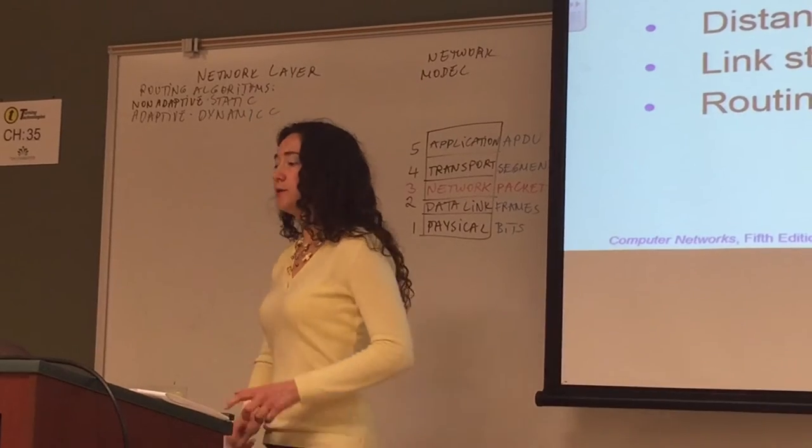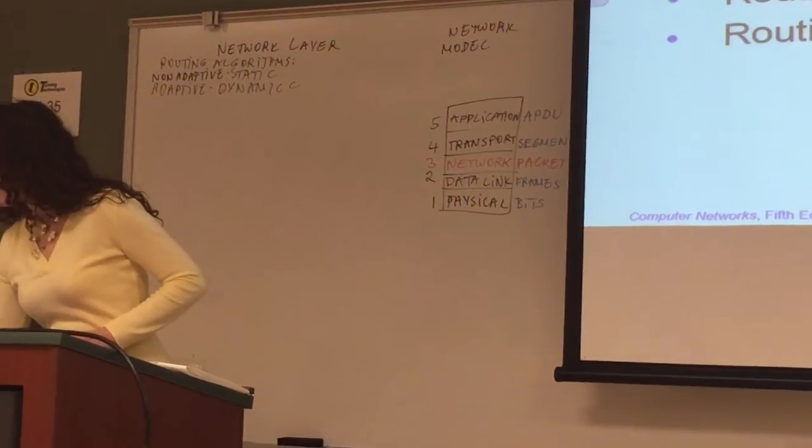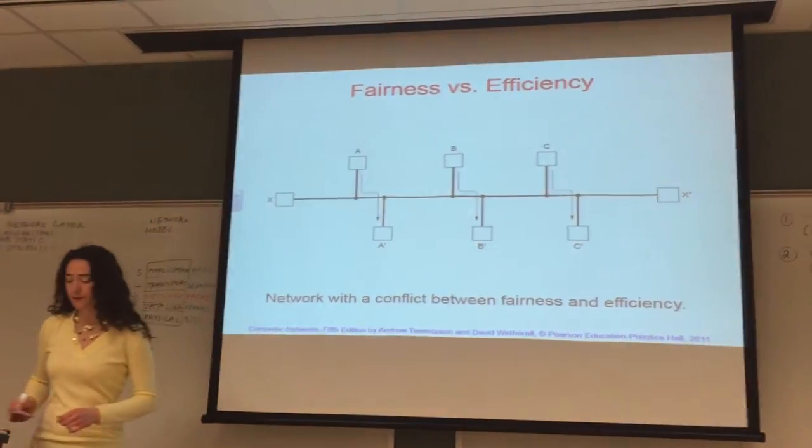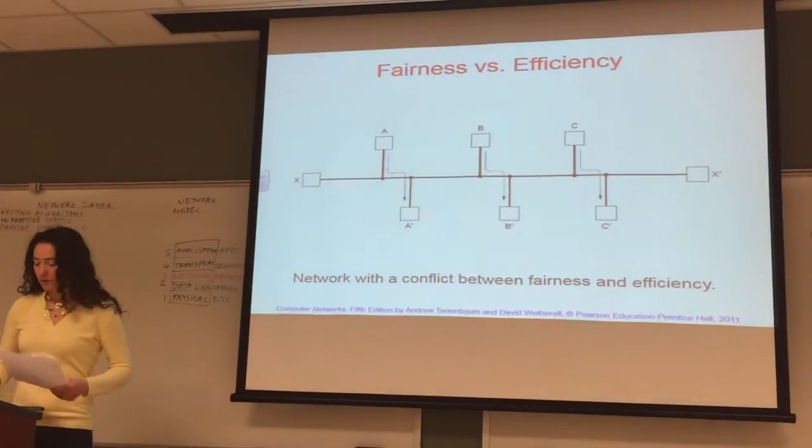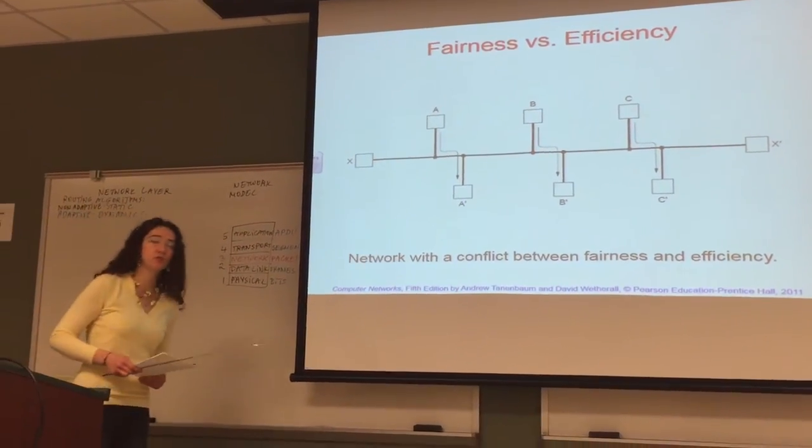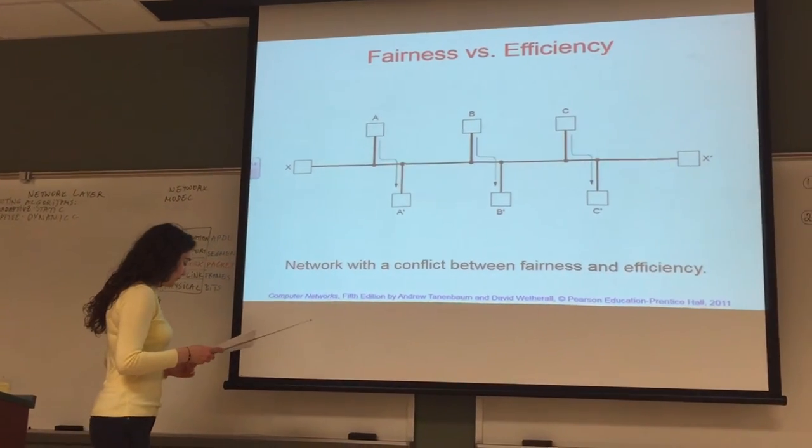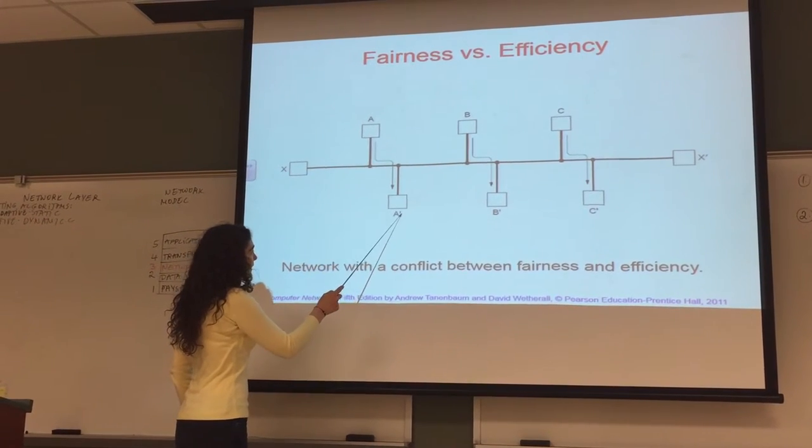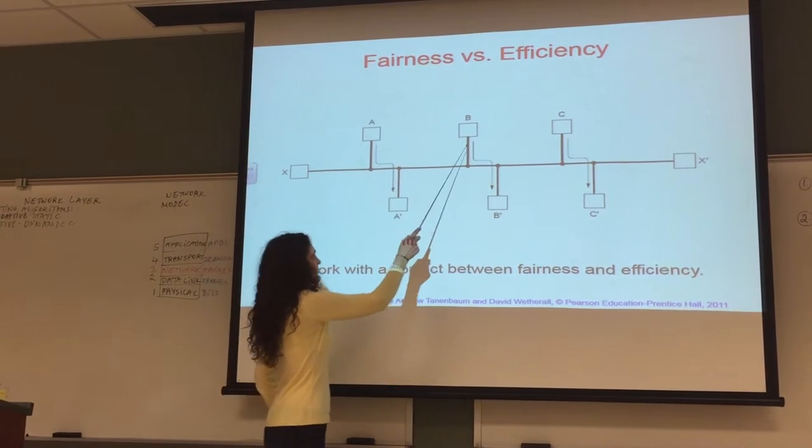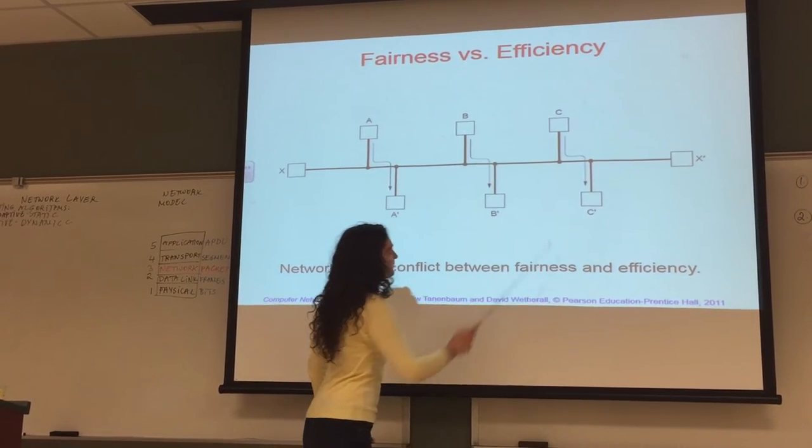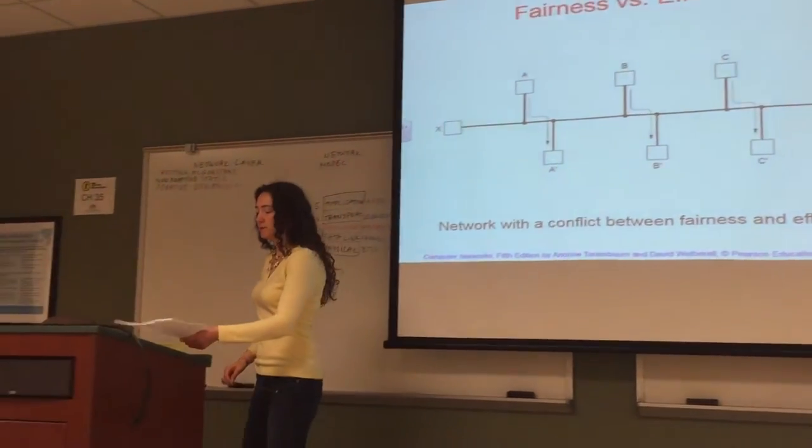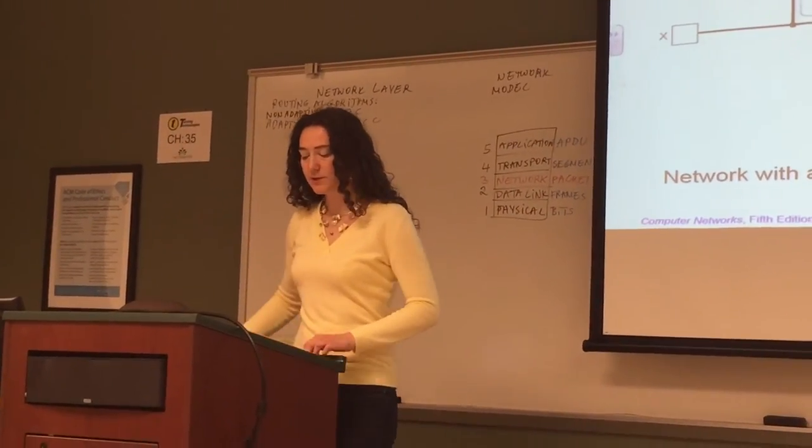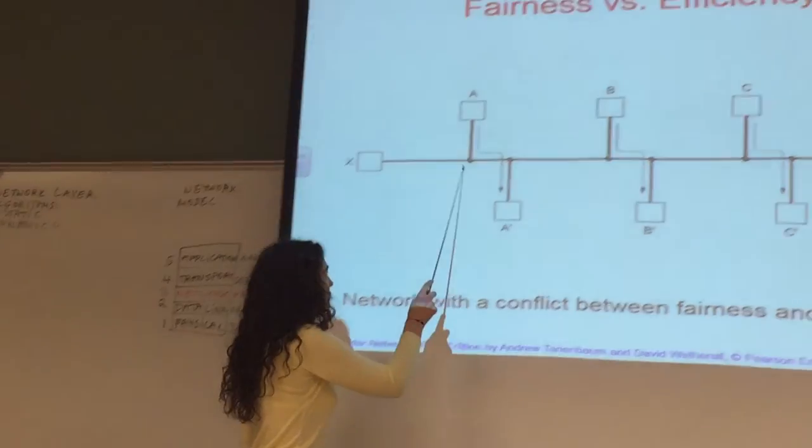When we talk about routing, we need to consider fairness versus efficiency, because fairness and efficiency are two contradictory goals. For example, if we look here, let's say the traffic between A and A' is maximized, and between B and B' is maximized, and C and C'. The traffic is strong enough to saturate all of these horizontal links here.